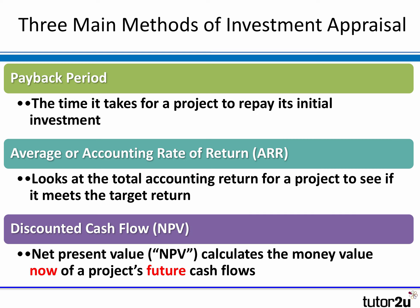And thirdly, the one we'll look at in this webinar — discounted cash flow. It's often shortened to DCF and it involves a thing called net present value or NPV, which looks at the value now of the cash flows arising in the future.